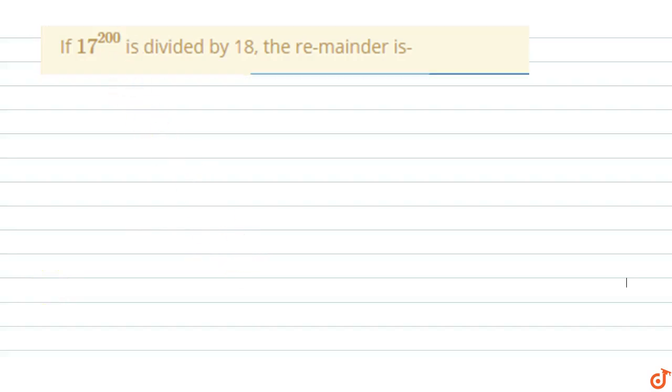In this question, if 17 power 200 is divided by 18, the remainder is... So we have to find the remainder when 17 power 200 is divided by 18.